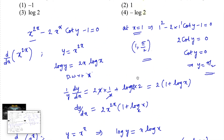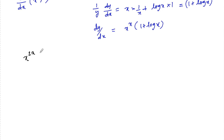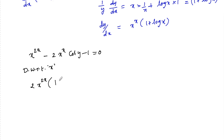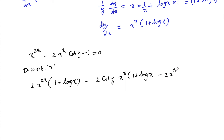Now differentiating the full function x to the power of 2x minus 2 into x to the power of x cot y minus 1 equals 0 with respect to x: the first term gives 2 into x to the power of 2x into 1 plus log x, minus 2 times cot y into x to the power of x into 1 plus log x, minus 2 times x to the power of x into negative cosecant squared y, giving plus cosecant squared y dy/dx. The derivative of the constant is 0.